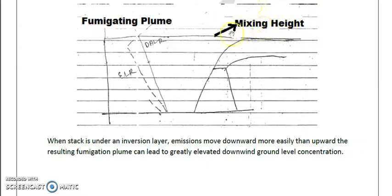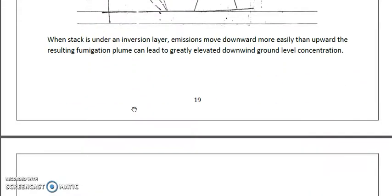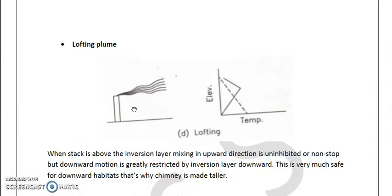So this sort of condition we observe fumigation. Now last but not the least type of plume is lofting plume, where you can clearly observe in the picture that the stack is above the inversion layer, so the stack height is more than the inversion layer.